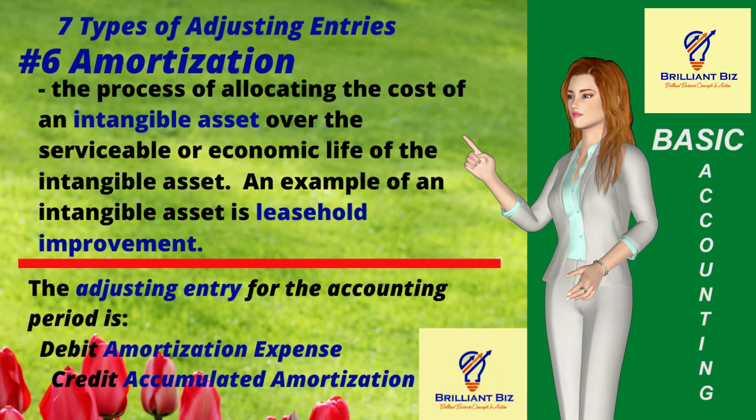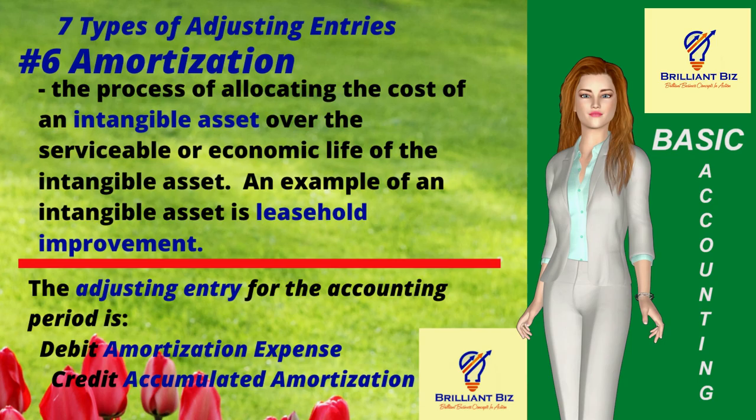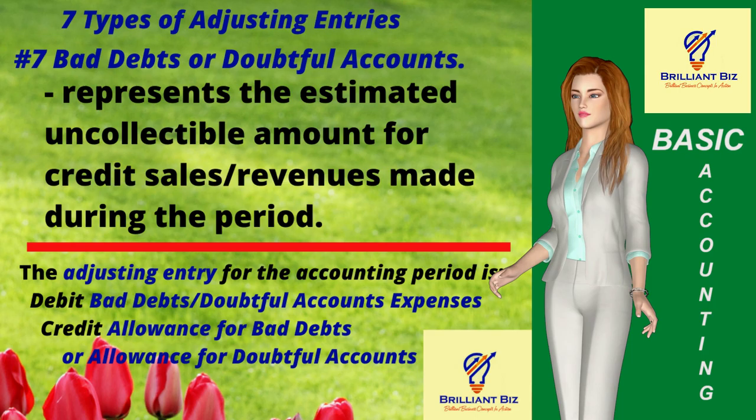Six: amortization. Amortization is the process of allocating the cost of an intangible asset over its serviceable life. An example is leasehold improvement. For the accounting period, the adjusting entry is debit amortization expense and credit accumulated amortization by the same amount. The accumulated amortization is the total amortization expenses of a company's intangible assets as of a given period.